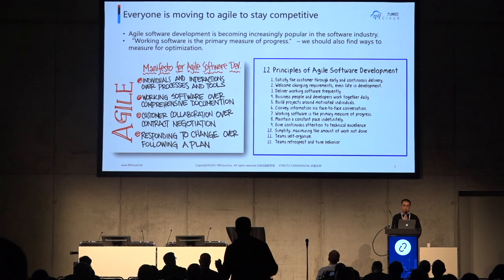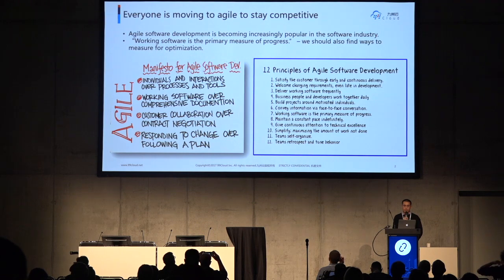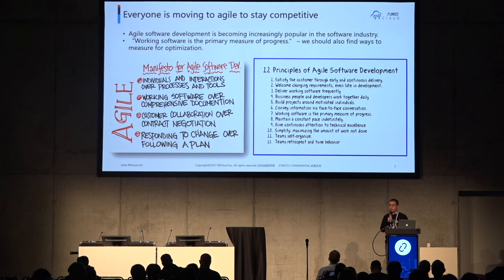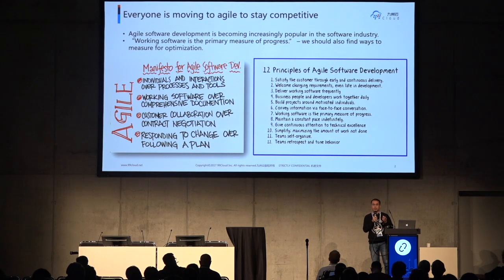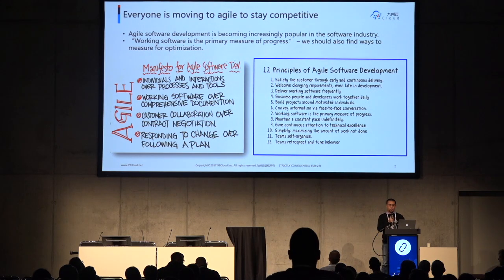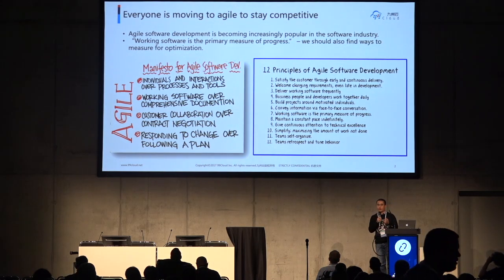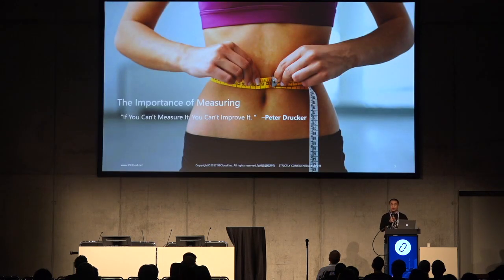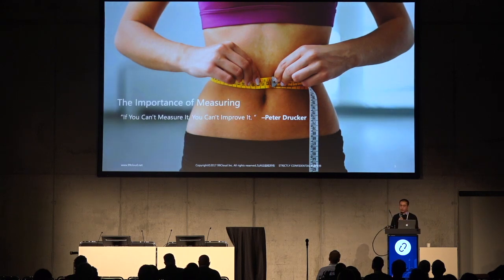One principle states that working software is the primary measure of progress. Because Agile development is very different from traditional waterfall development, it emphasizes more about interaction and communication. So it's not easy to actually implement Agile models, and even harder to define metrics to optimize them. But we need to define metrics to optimize them, because as Peter Drucker said, if you cannot measure it, you cannot improve it.